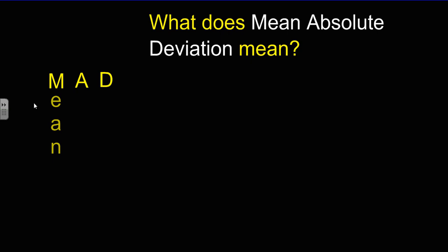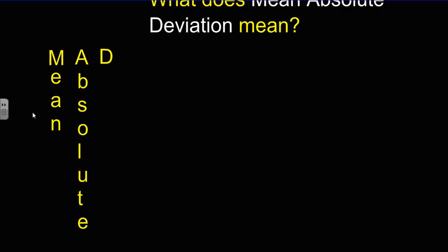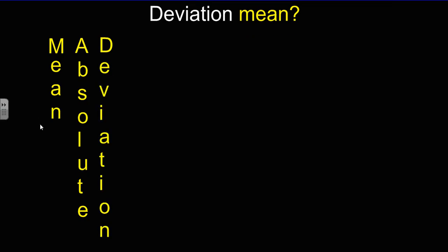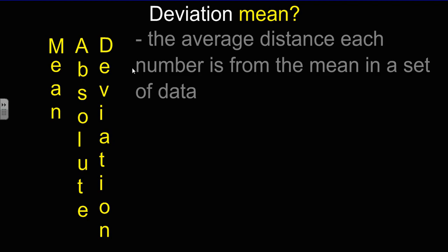So let's look at each word in this acronym. Mean would suggest the average. Absolute represents absolute value, and that often is associated with distance. And finally, deviation, how much a number deviates from another or differs from another.